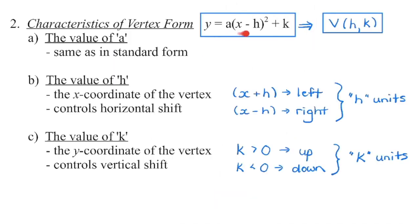So the vertex form of a quadratic gives us the coordinates of the vertex directly. A is the same as in standard form — it controls direction of opening and how wide or narrow the parabola is. If we see x plus h in the brackets, remember that's the same as x minus a negative, so the parabola has shifted to the left. If we see x minus h in the brackets, the parabola has shifted to the right — anything in brackets behaves opposite to what you expect. h is the number of units we're moving the graph left or right. k is outside the bracket, so it behaves as expected: k positive means the parabola shifts up, k negative means it shifts down, by k units.